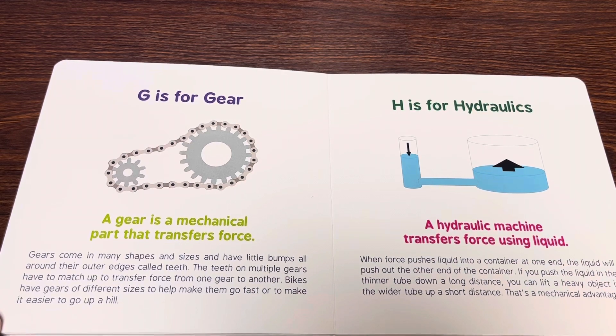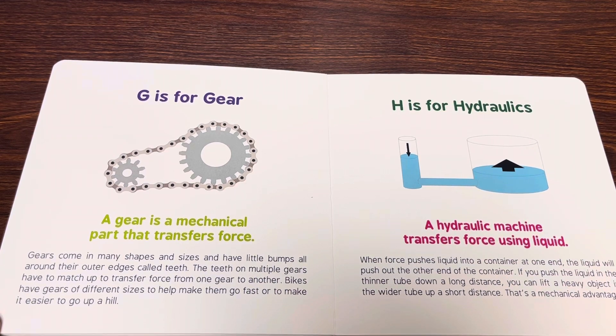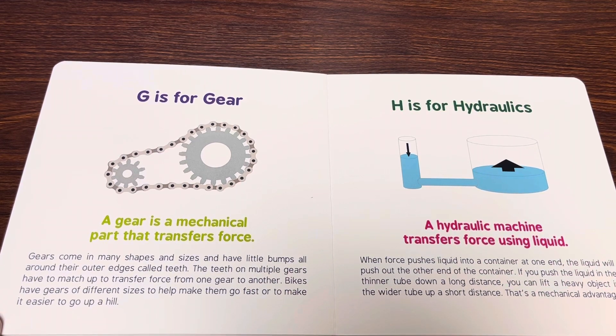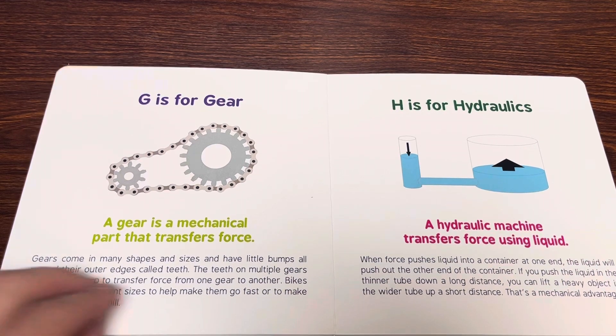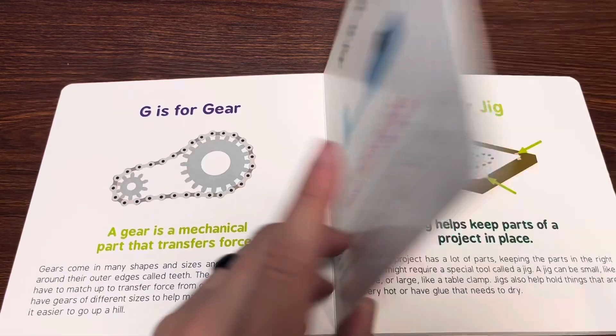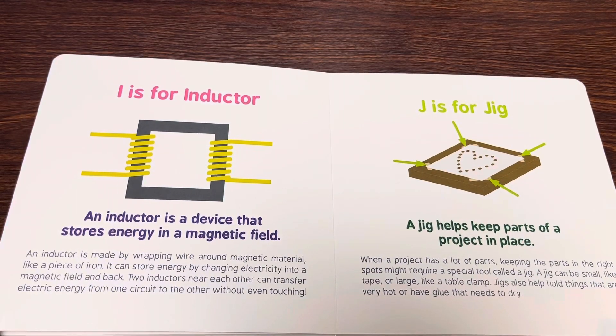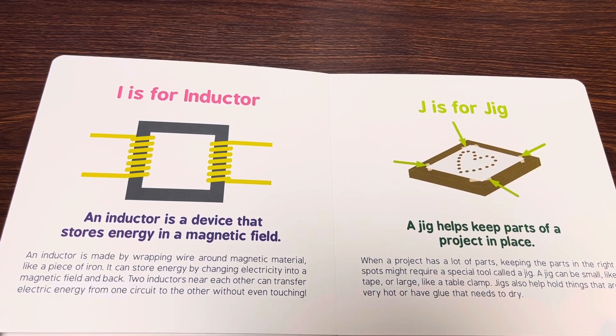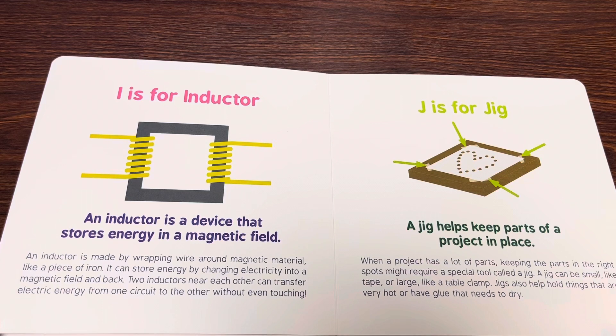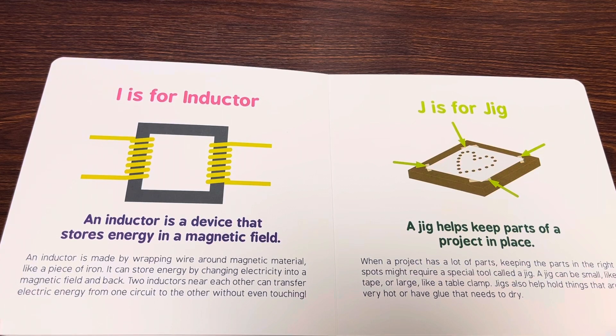H is for hydraulics. A hydraulic machine transfers force using liquid. I is for inductor. An inductor is a device that stores energy in a magnetic field.